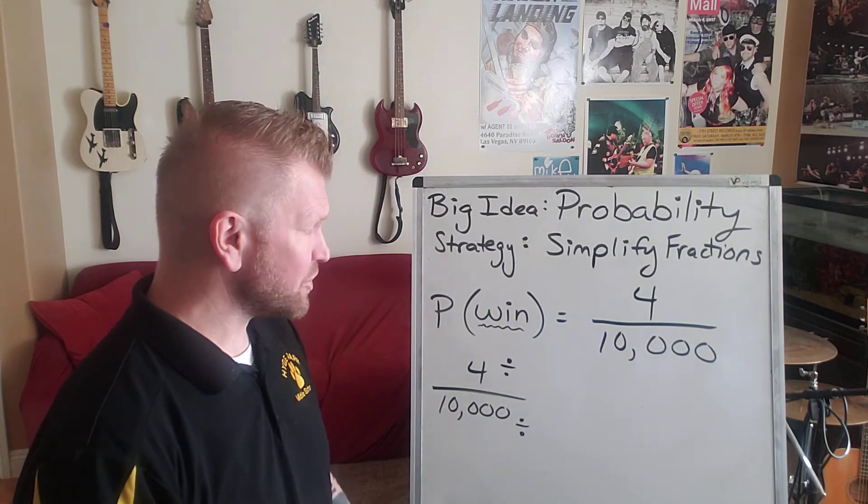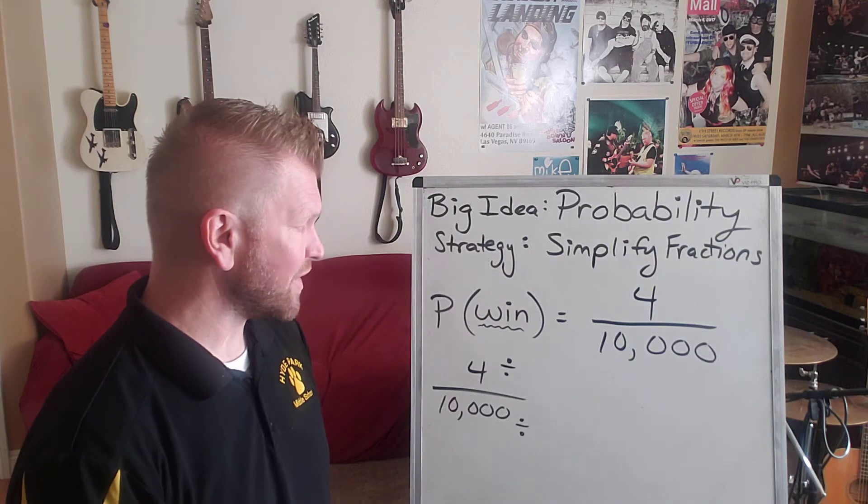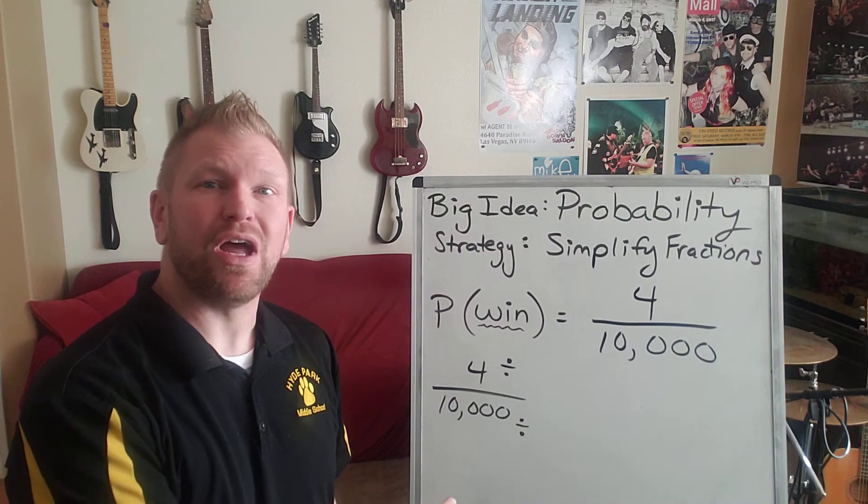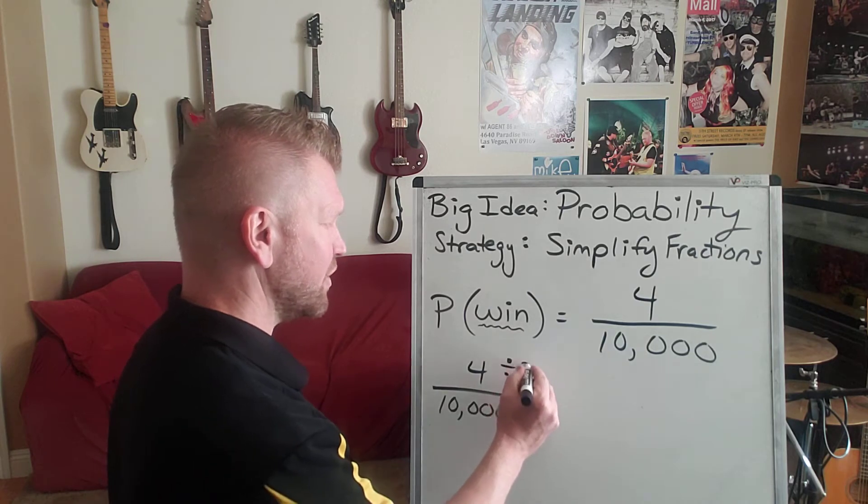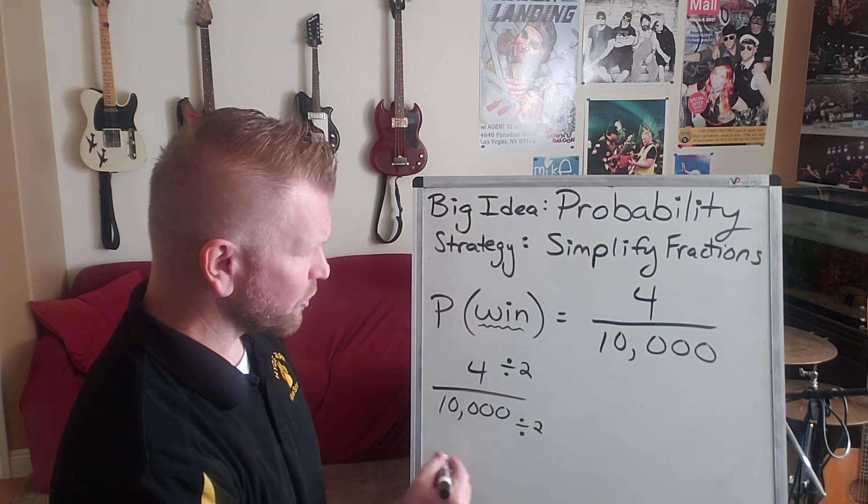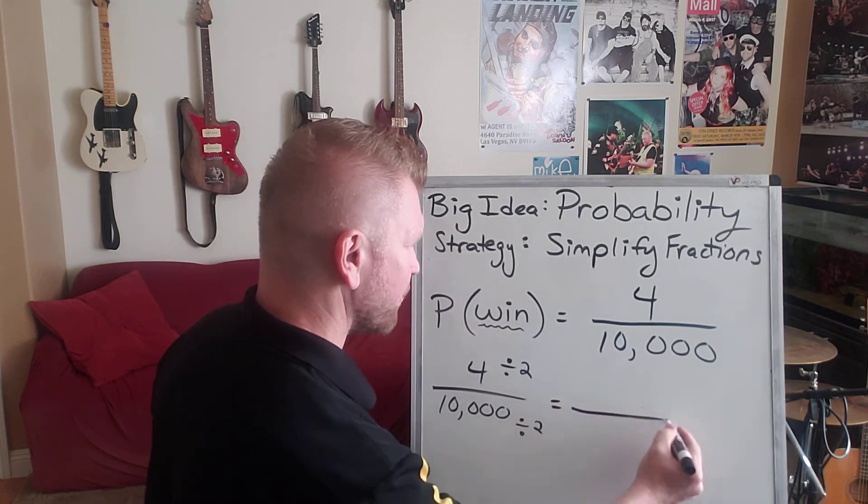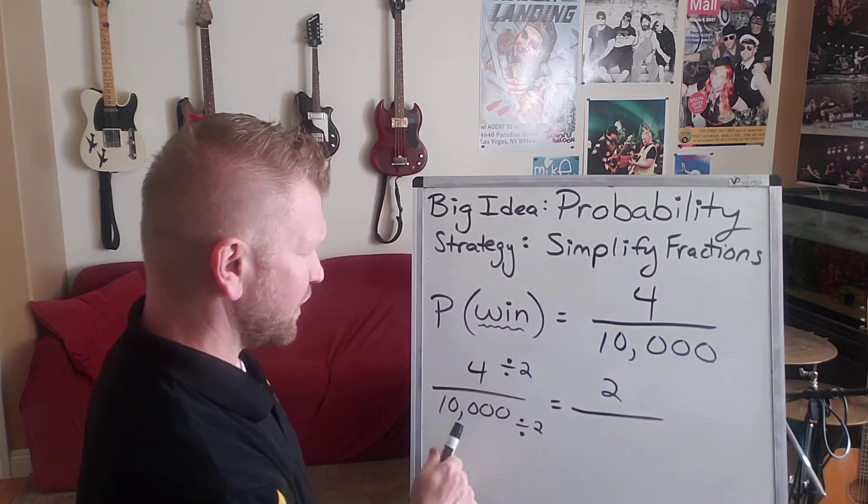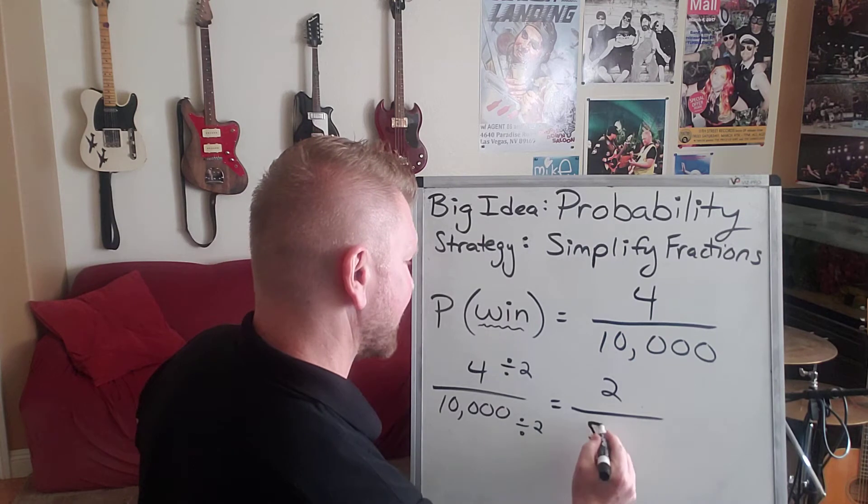Now, there's a couple of numbers that are divisible into four and also 10,000. We could use the rule that they're both even. So remember, any number that's even is divisible by two. So if we know they're both even, we could divide them both by two. That would change this to two, and 10,000 divided by two would be 5,000.